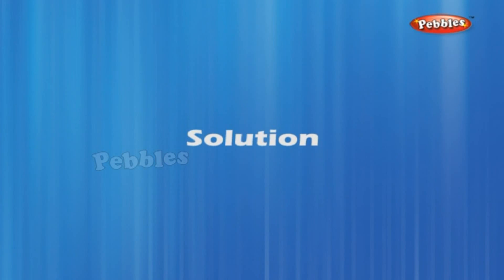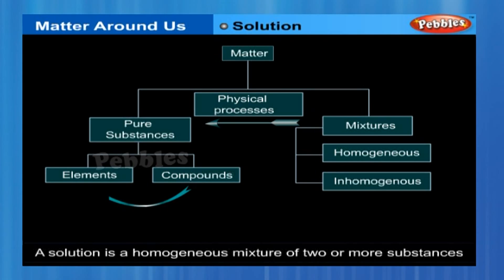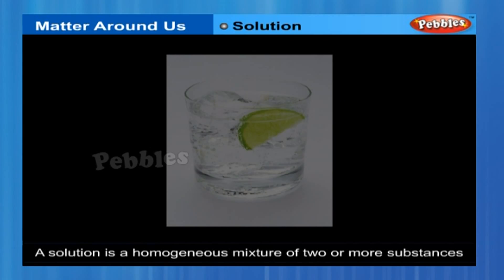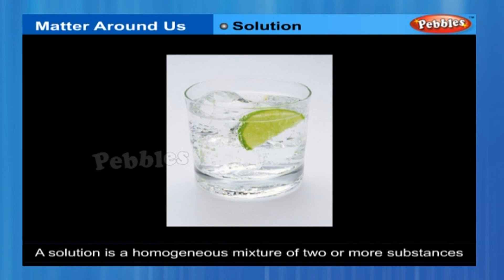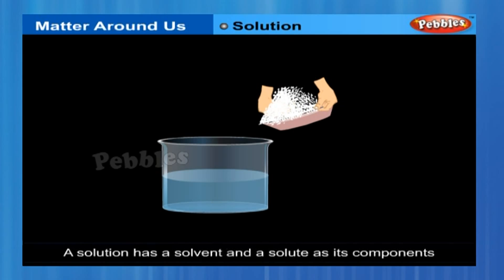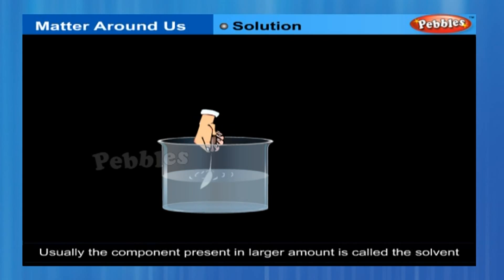A solution is a homogeneous mixture of two or more substances. We come across various types of solutions in our daily life — lemonade, soda water, etc. are all examples of solutions. We can also have solid solutions, such as alloys, and gaseous solutions, such as air. A solution has a solvent and a solute as its components. The component that dissolves the other is called the solvent, and the component that is dissolved is called the solute.